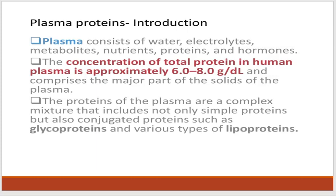The concentration of total proteins in human plasma is approximately 6 to 8 grams per deciliter. The proteins of the plasma are a complex mixture that includes not only simple proteins but also conjugated proteins such as glycoproteins and various types of lipoproteins.